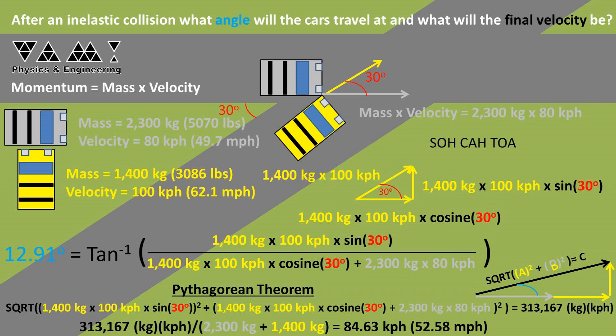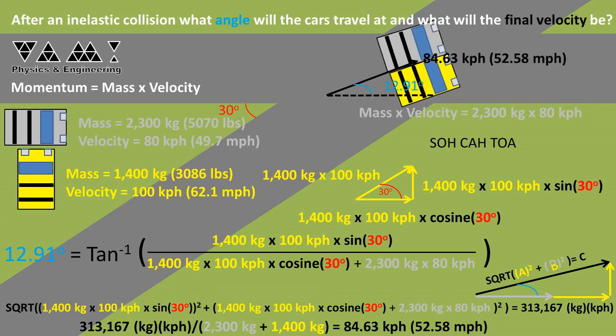To get the velocity of the two cars after the collision, we can divide the momentum value we found in the previous step by the total mass of the system, which is the mass of the gray car plus the mass of the yellow car combined. We get a final velocity of 84.63 kilometers per hour, or 52.58 miles per hour.